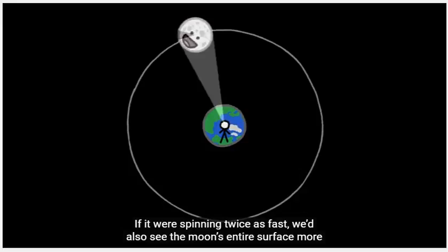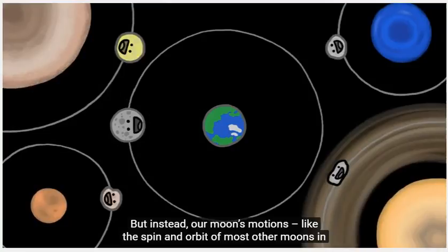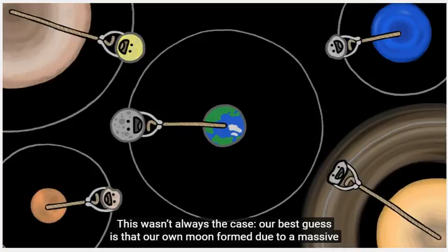If it were spinning twice as fast, we'd also see the Moon's entire surface more than once per orbit. But instead, our Moon's motions – like the spin and orbit of most other moons in our solar system – are, remarkably, in perfect sync.